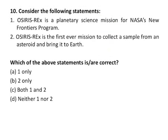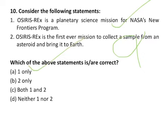The last question is about OSIRIS-REx, a planetary science mission under NASA's New Frontiers program — this statement is correct. The second says OSIRIS-REx is the first-ever mission to collect a sample from an asteroid and bring it to Earth — this is wrong. In June 2010, Japan's JAXA Hayabusa probe had already returned asteroid samples to Earth. So only statement 1 is correct, and A is the correct answer.